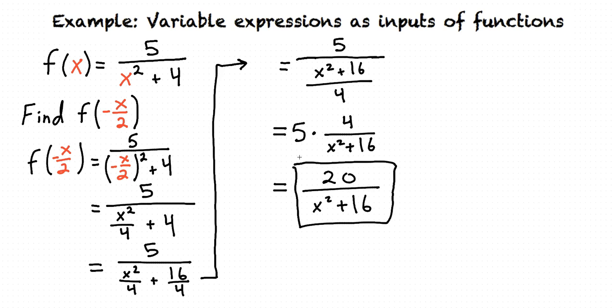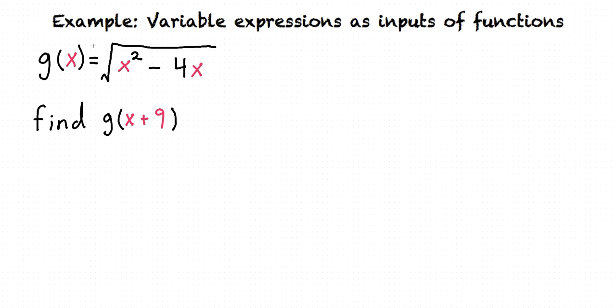Let's do one more example. Suppose we're given the function g of x equals the square root of x squared minus 4x. And we want to find g of x plus 9. Again, anywhere we see an x in our original function, we're going to replace it with this variable expression. So that's going to look like this: g of x plus 9 is the square root of x plus 9 squared minus 4 times x plus 9.